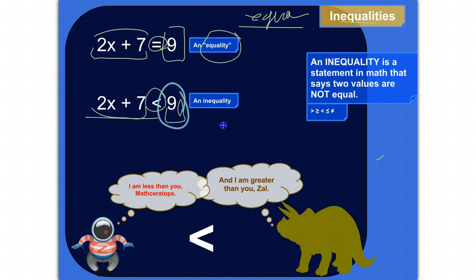So you could say 5x, whatever x is, if you multiply by 5, it's more than, or greater than, I don't know, let's say, 100.